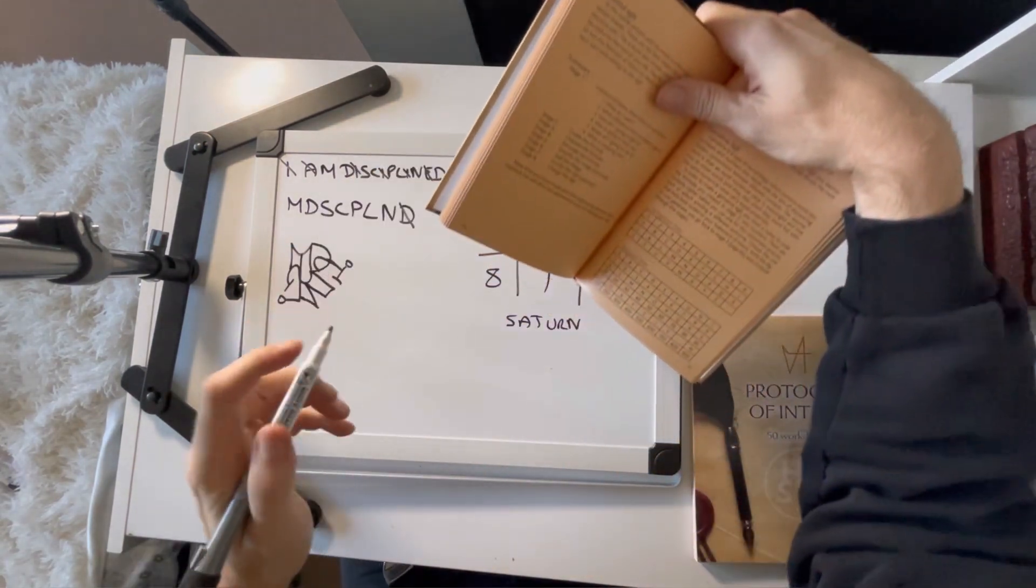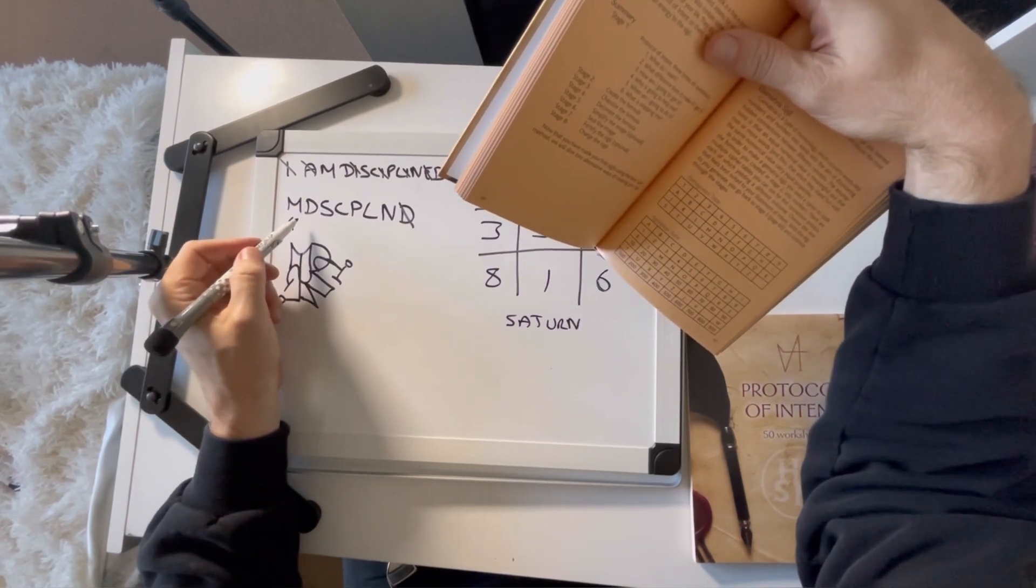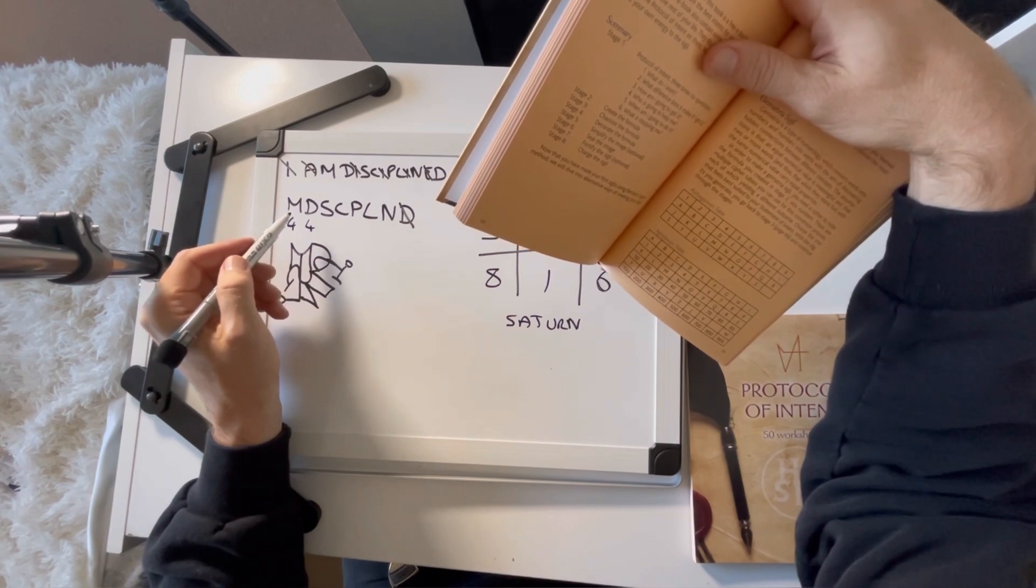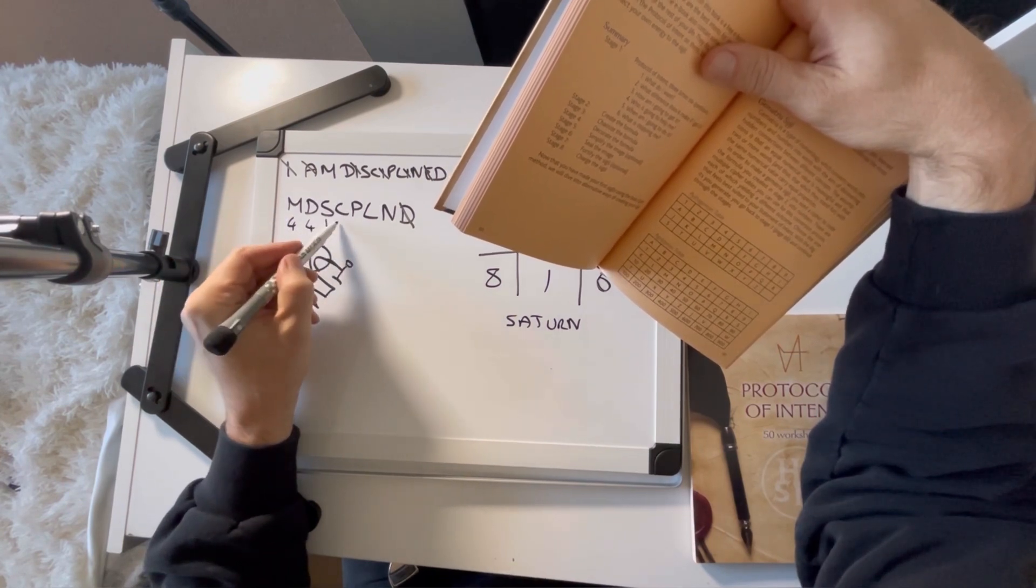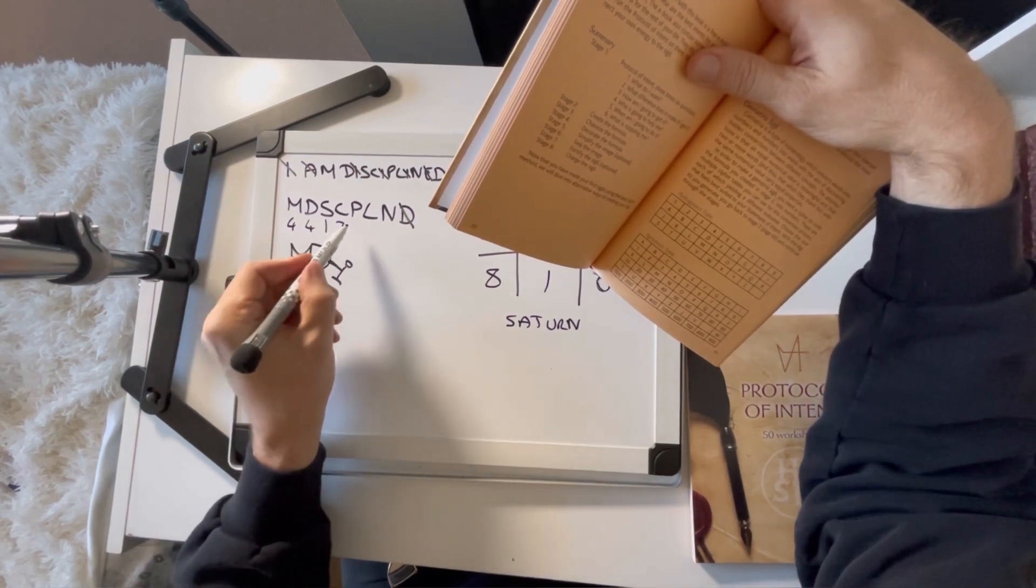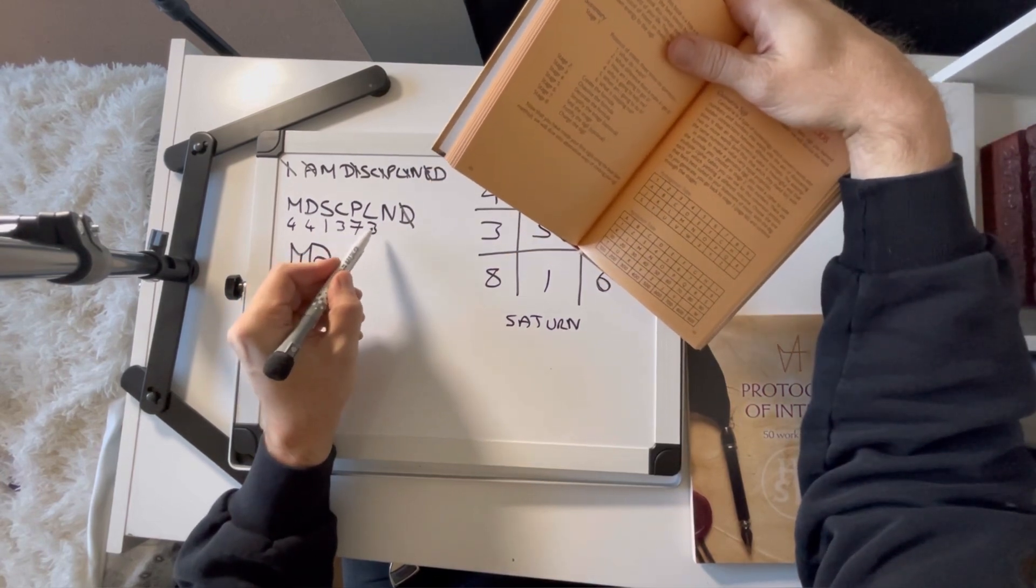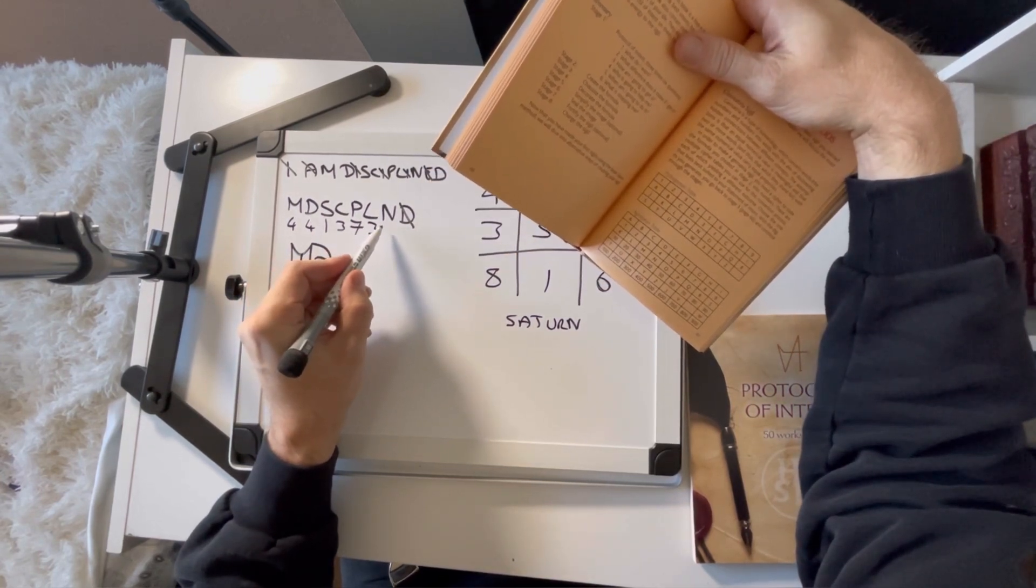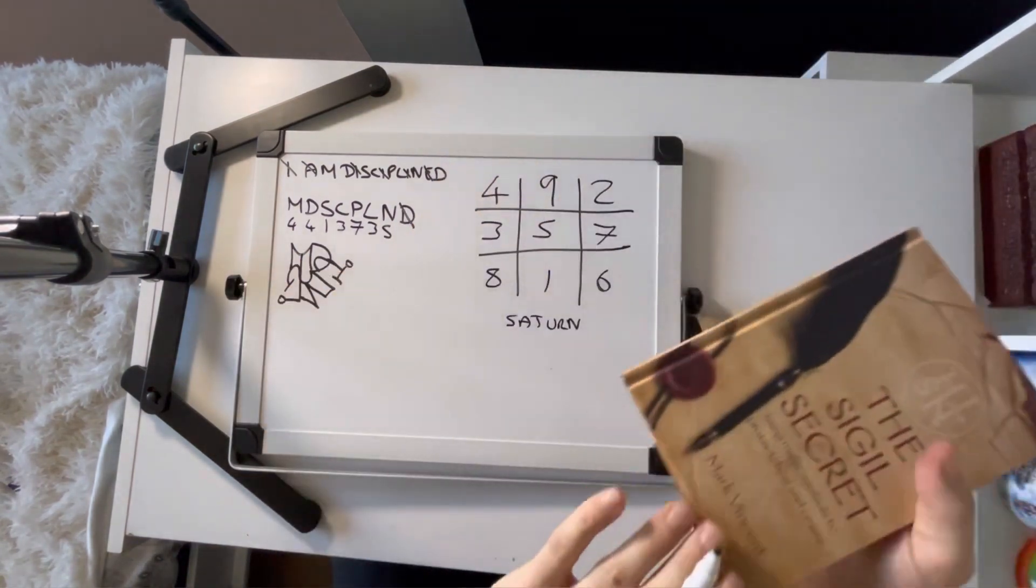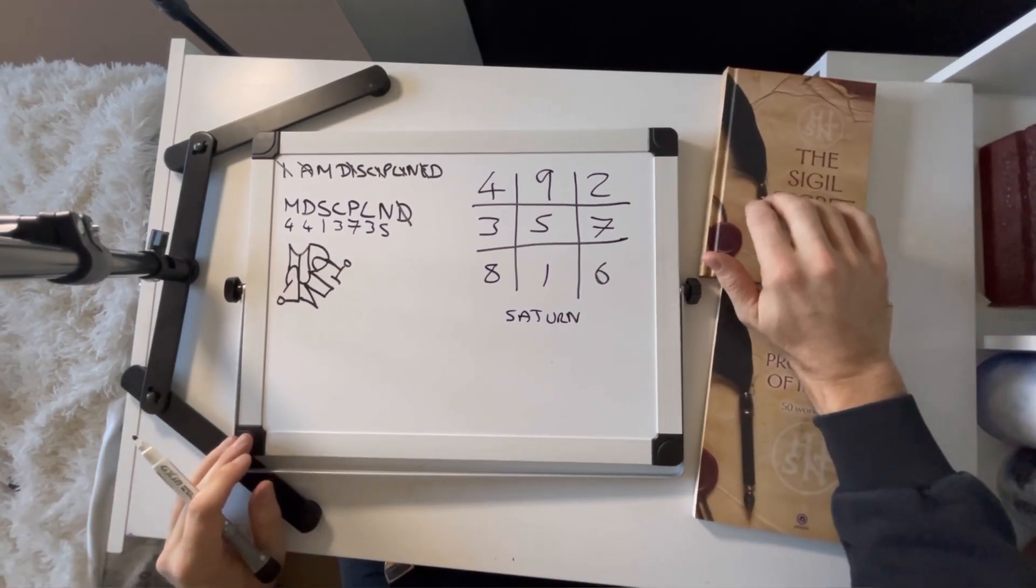So we're going to use the Pythagorean table and we're going to convert the numbers into letters. And so the letter M is 4, D is 4, S is 1, C is 3, P is 7. So I put a line through the 7 just so it's obvious. L is 3. So we're going to get a few duplicates here. N is 5. 4, 4, 1, 3, 7, 3, 5.